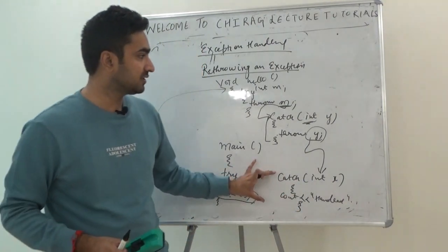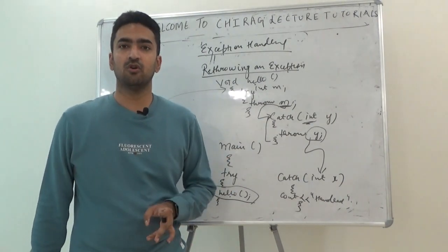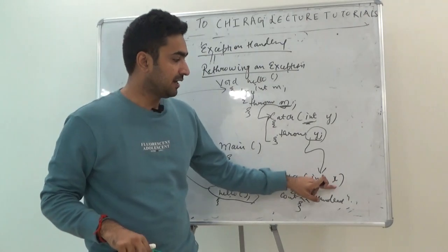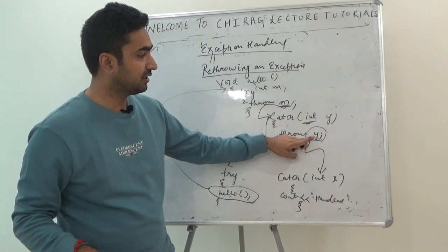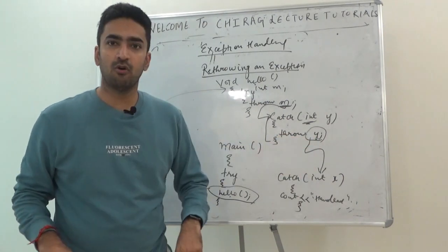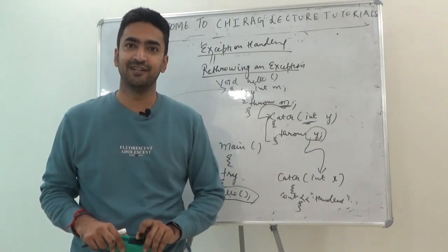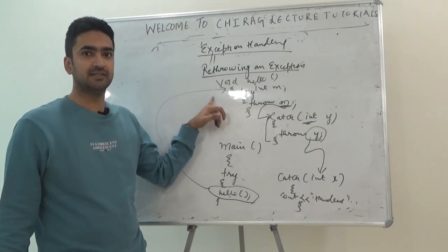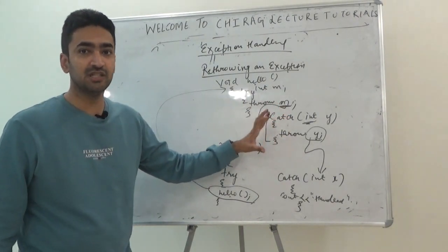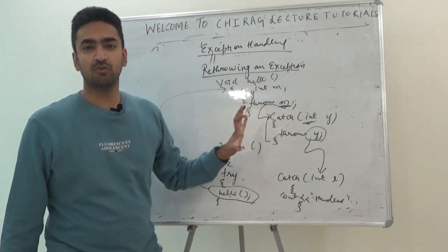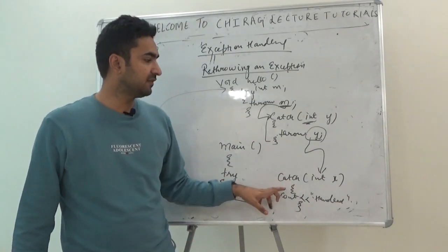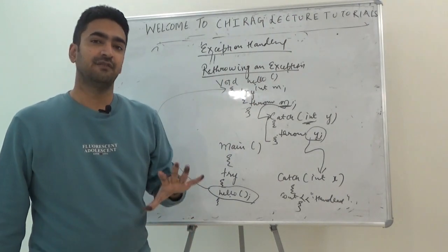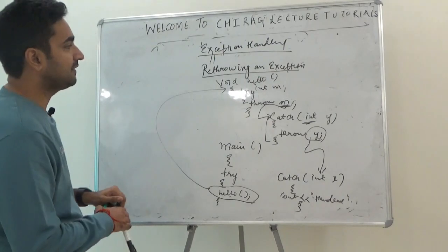When the inner catch block re-throws, execution goes back to main and checks whether another catch block is written there. When one catch block is not able to handle an exception, another catch block comes in handy. The re-thrown exception matches the int data type in main's catch block, so it prints 'handled'. Technically: function call → function definition → throw → inner catch → re-throw → outer catch in main → handled.